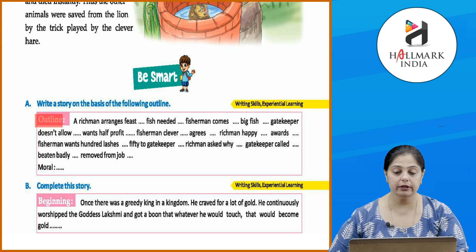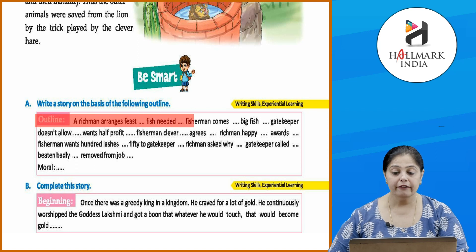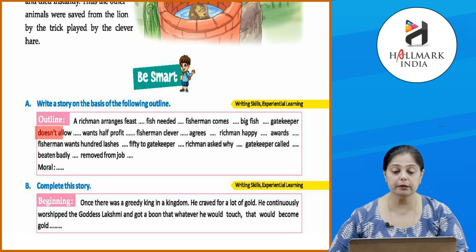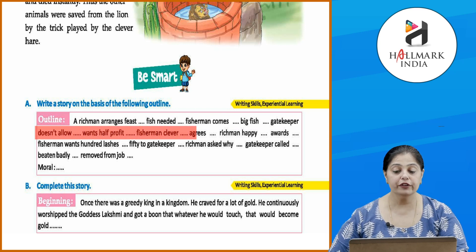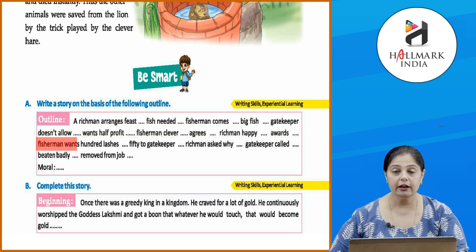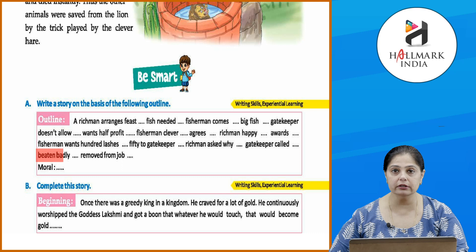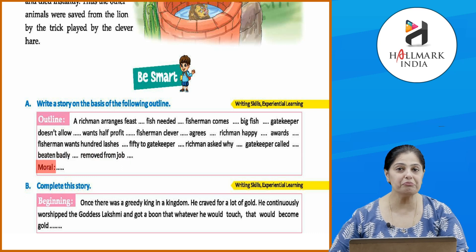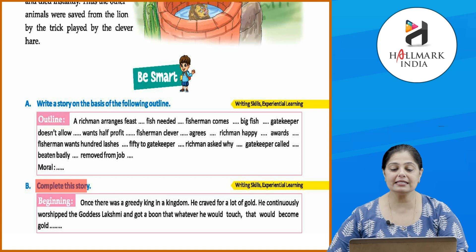Now, be smart and write a story on the basis of the following outline: A rich man arranges a feast, fish is needed, fisherman comes with a big fish, gatekeeper doesn't allow him and wants half profit, fisherman cleverly agrees, rich man is happy and awards the fisherman, fisherman wants a hundred lashes — fifty for the gatekeeper. Rich man asks why, and the gatekeeper is called, beaten badly, and removed from his job. Give a moral to this story.